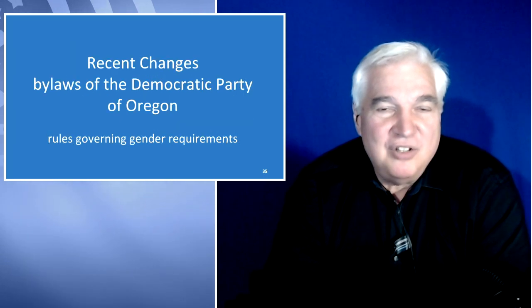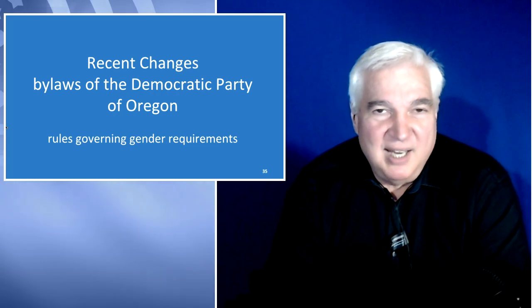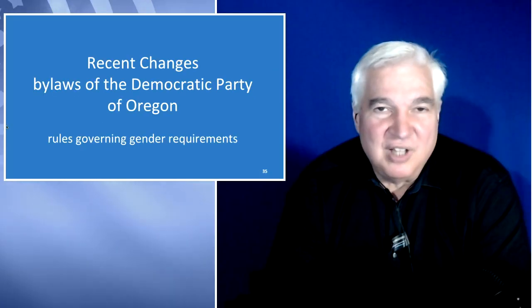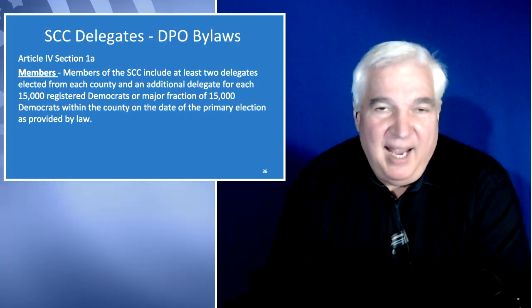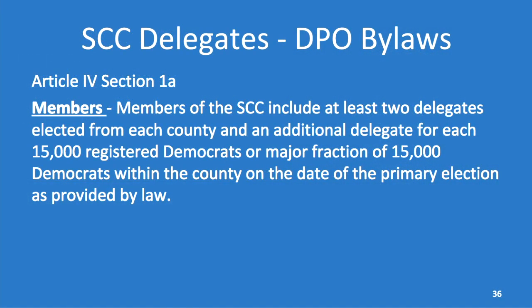The next section is about recent changes to the Democratic Party of Oregon bylaws. Other states would be interested in this because they're probably going to face these issues soon. The first section — which did not change — is about how the number of SCC delegates each county is eligible for is calculated. Members of the state central committee include at least two delegates elected from each county, no matter how small. You get one additional delegate for each 15,000 registered Democrats.